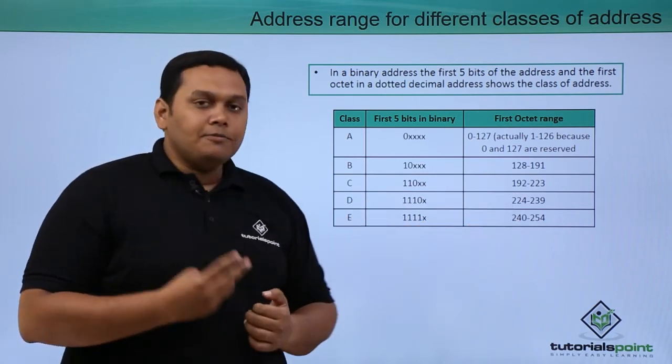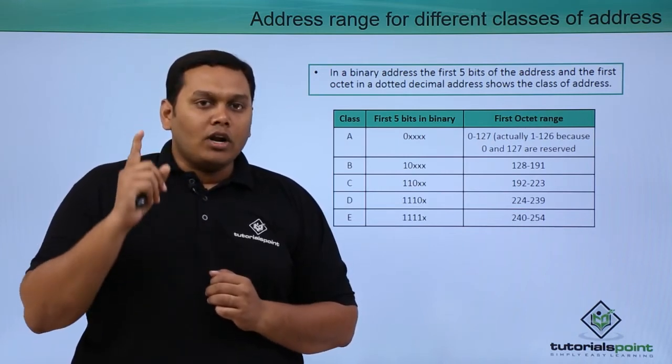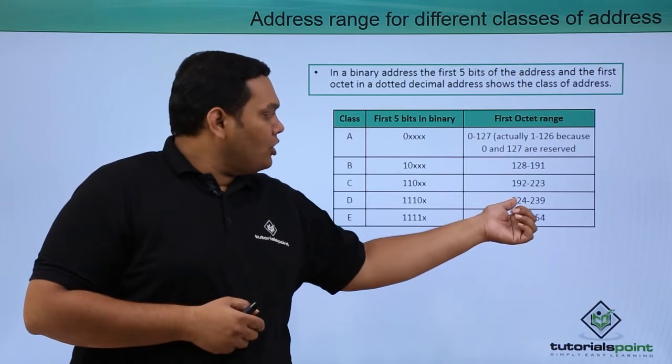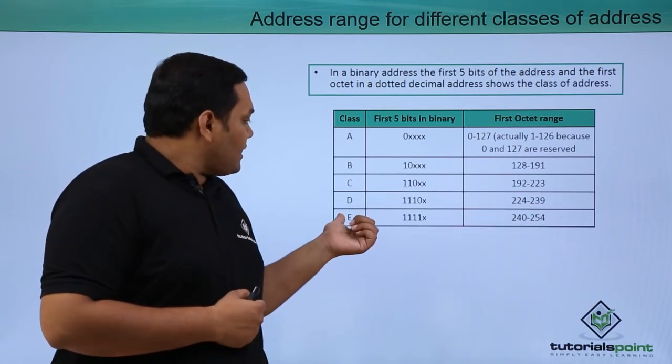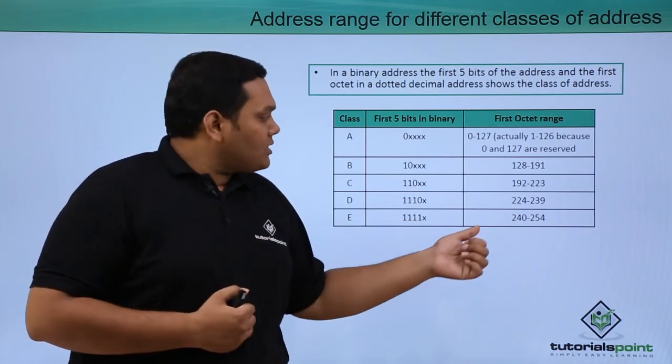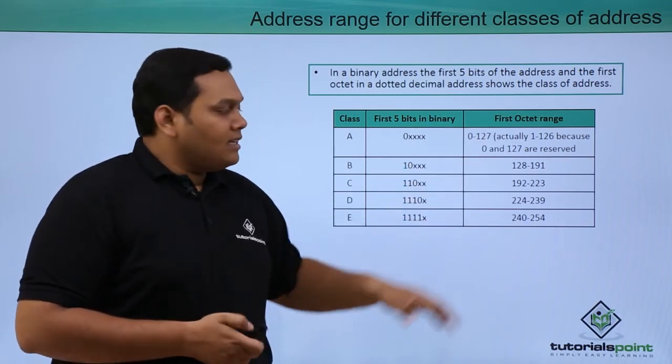Coming to class D, the first 3 bits in the octet should be 1. So 128 plus 64 plus 32 gives you 224 to 239 range. Class E has 4 bits given as 1, so it starts from 240 to 254. These are the octet ranges.